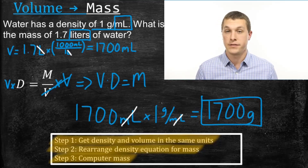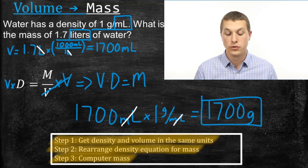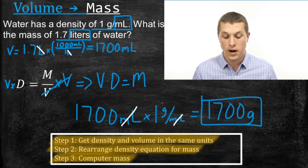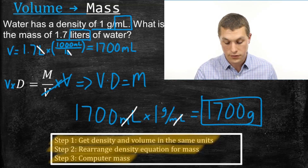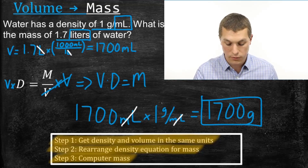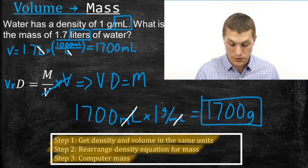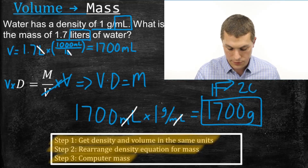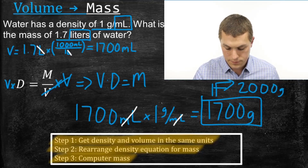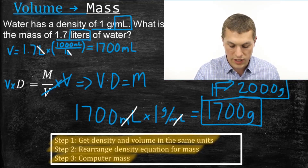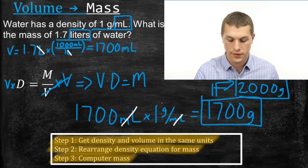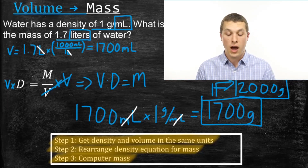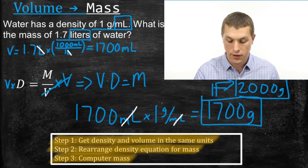If you want to round to sig figs, our density only has one sig fig, so we round to one sig fig and get 2000 grams. So if you take sig figs into account, the answer will be 2000 grams. Now we're going to go the other direction — from mass to volume.